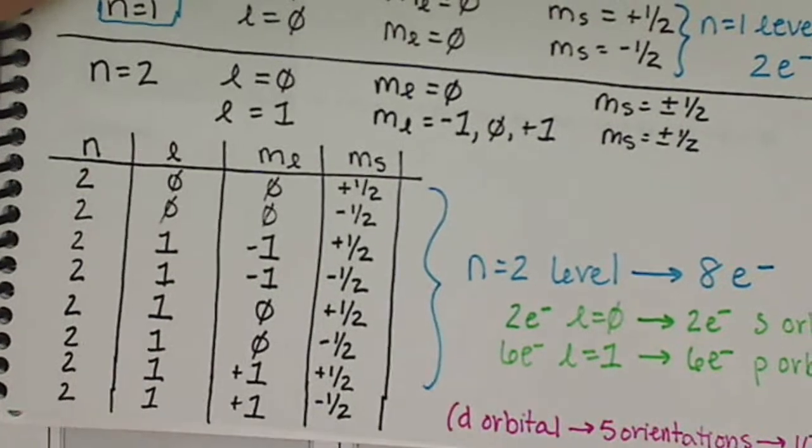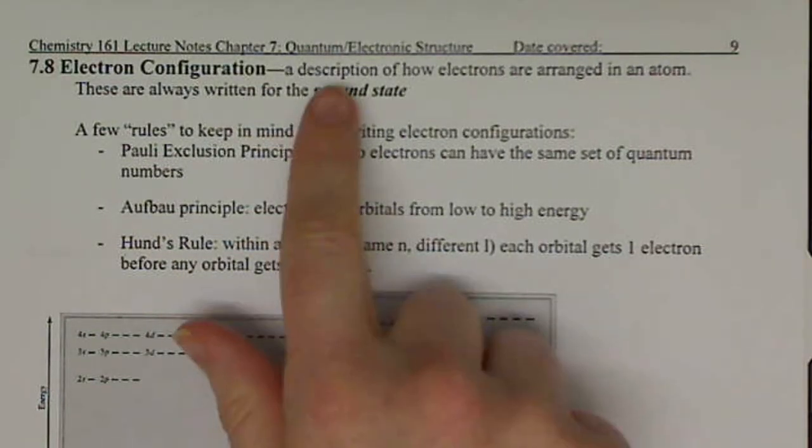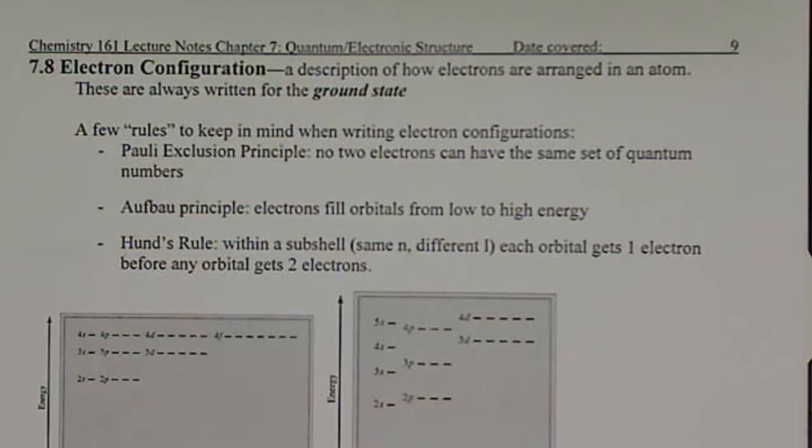So we have other ways that we can represent our electrons. We call them electron configurations. Essentially, we're looking at a description of how the electrons are arranged in an atom, what orbitals they're in, what energy level they're at, what quantum level they're at.